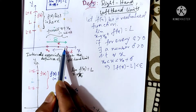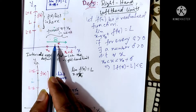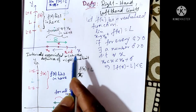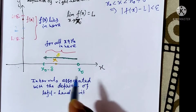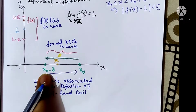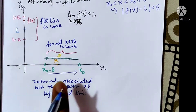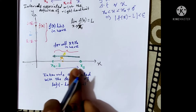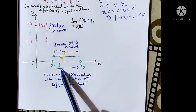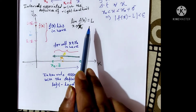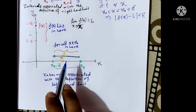In this picture, if we go from x₀ plus delta to x₀, then we say that x tends to x₀⁺. For the left limit, x₀ is the point and x₀ minus delta is to its left. If x lies in that region and f(x) lies between l minus epsilon and l plus epsilon, and if x goes from left to right — from x₀ minus delta to x₀, that is x tends to x₀⁻ — and the limit of f(x) is l, then we say the function has a left limit.